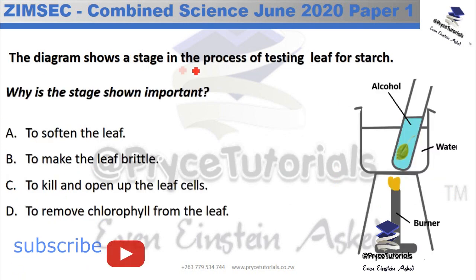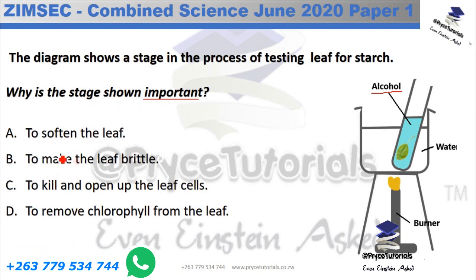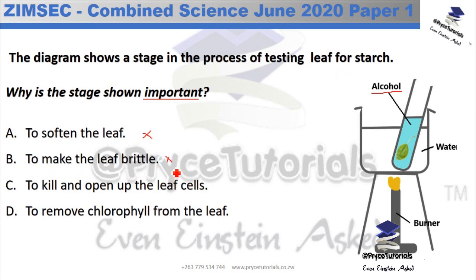The diagram shows a stage in testing a leaf for starch. The stage shows a Bunsen burner heating water in a beaker, with alcohol in the water and a leaf inside the alcohol — so the alcohol is being indirectly heated. Softening the leaf uses water alone, not alcohol. Making the leaf brittle is not the primary purpose. Killing and opening cells is not it either. What the alcohol does is remove the chlorophyll from the leaf. So the answer is option D.